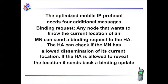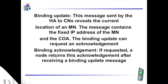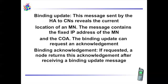The optimized mobile IP protocol needs four additional messages. Binding request: any node that wants to know the current location of an MN can send a binding request to the HA. The HA can check if the MN has allowed dissemination of its current location. If the HA is allowed to reveal the location, it sends back a binding update. Binding update: this message sent by the HA to CNs reveals the current location of an MN. The message contains the fixed IP address of the MN and the care-of address. The binding update can request an acknowledgement.